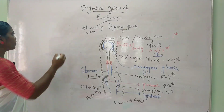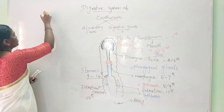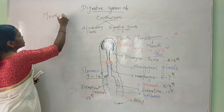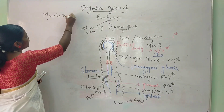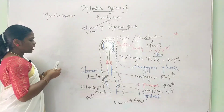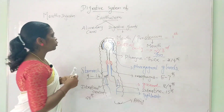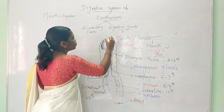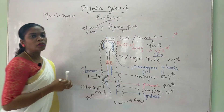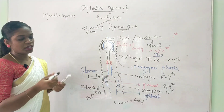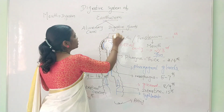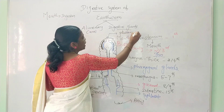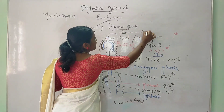First, we will start from the mouth — its function is ingestion of food substance. There is also a small overhanging structure at the mouth. Looking at the morphology, this is the prostomium, which is a sensory organ.